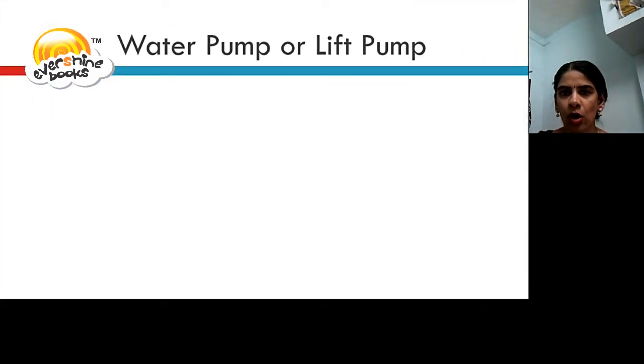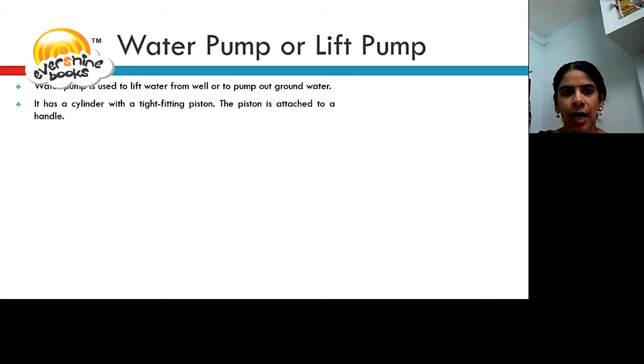Water pump is used to lift water from the well or to pump out from the ground water. It has a cylinder with tight-fitting piston. The piston is attached to a handle. The pump has two valves. One is a foot valve and the other is a piston valve. Both can open upwards only.